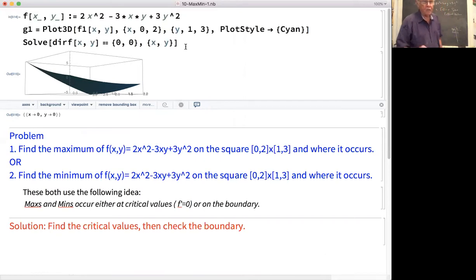The second one is solve the derivative of f equal to 0, 0 for x and y. And in minuscule letters down here, it tells you 0, 0 is the only solution to that. You have to be careful with solve. It doesn't always give you all of the solutions. So there can be a little bit of play between graphing and using Mathematica commands, but let's check the boundary.